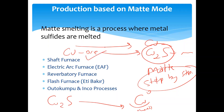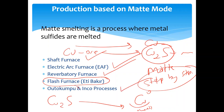Various furnace types are used: shaft furnace, electric arc furnace, reverberatory furnace, flash furnace. For example, the Etibakır plant uses the Outokumpu flash smelting process, developed in Finland.